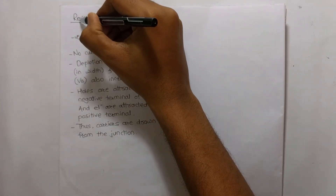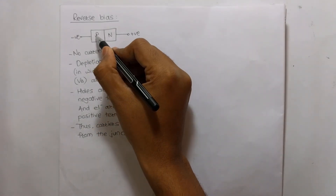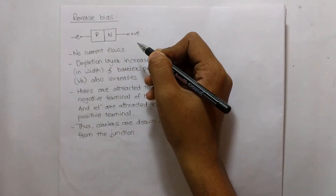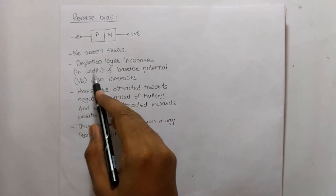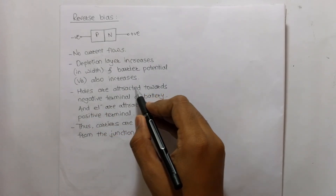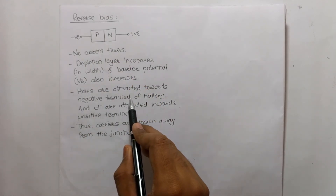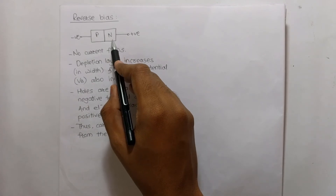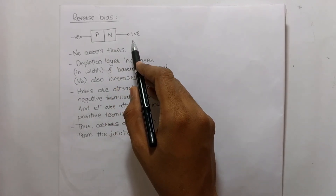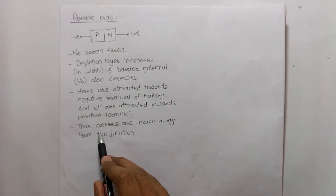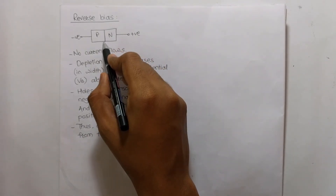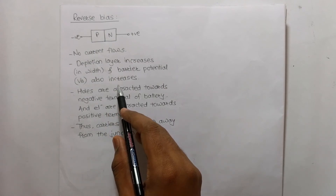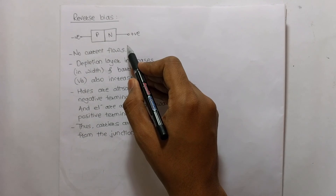In reverse bias, the P-type part is connected to the negative terminal and the N-type is connected to the positive terminal. No current flows, and the depletion layer increases in width while the barrier potential Vb also increases. The holes in the P-type semiconductor are attracted towards the negative terminal, and the electrons in the N-type semiconductor are attracted towards the positive terminal. Carriers are drawn away from the junction, increasing the depletion layer width and barrier potential. Thus no current flow happens in reverse bias.